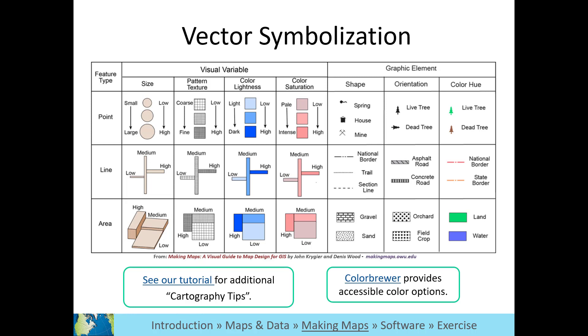While color is one of the more common ways to symbolize data, this chart shows additional ways to show differences among features on your map by varying size, pattern, shape, and orientation.